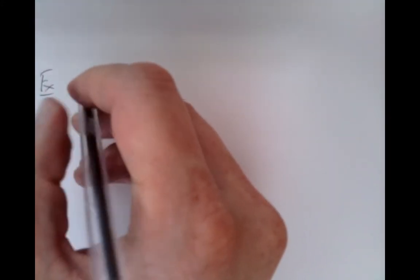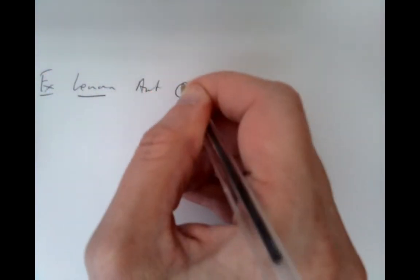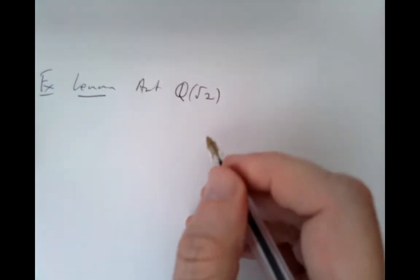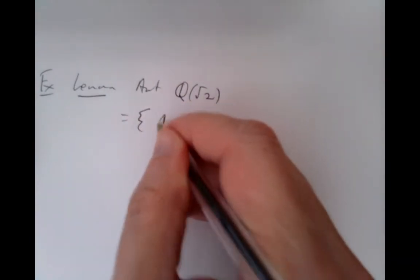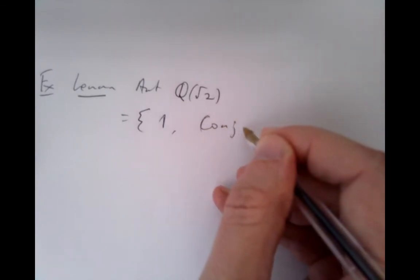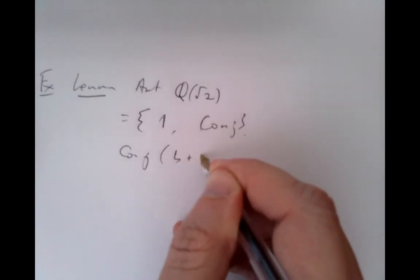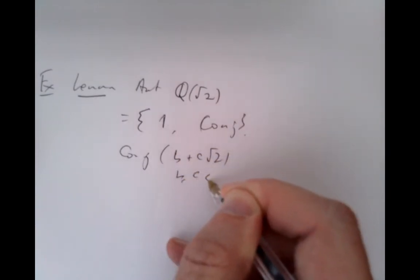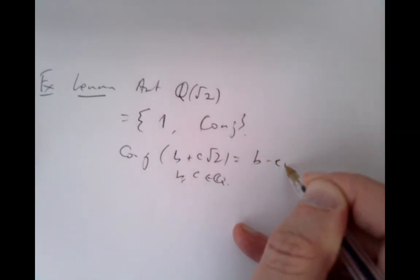Now we can work out the automorphism groups of some other structures. As an example, the automorphism group of Q(√2) consists of exactly the identity automorphism and the conjugation automorphism. The conjugation operation on b + c√2 (with b and c rational) is defined to be b − c√2.